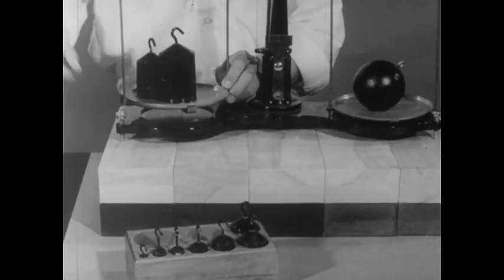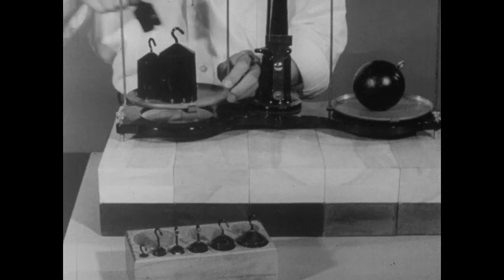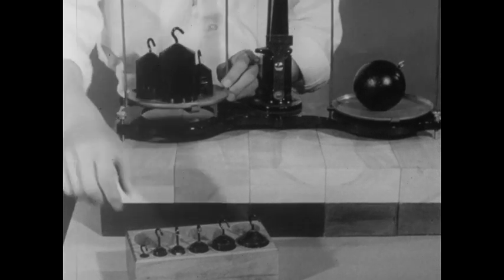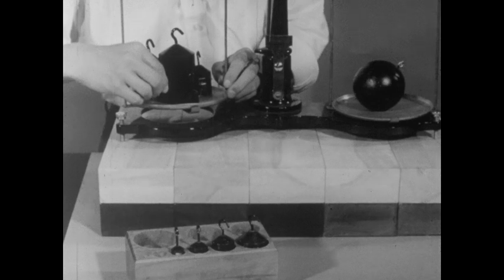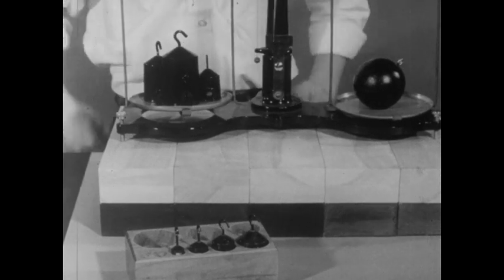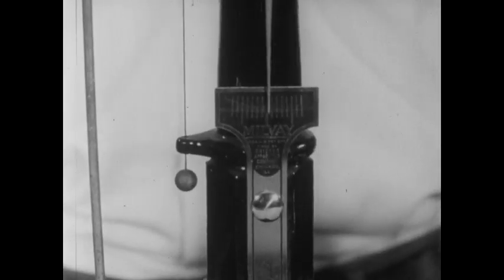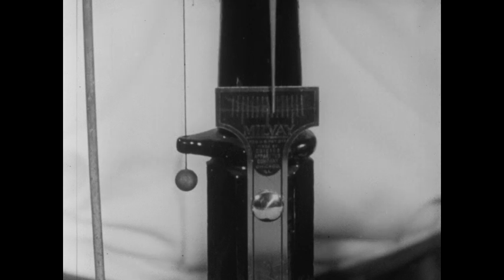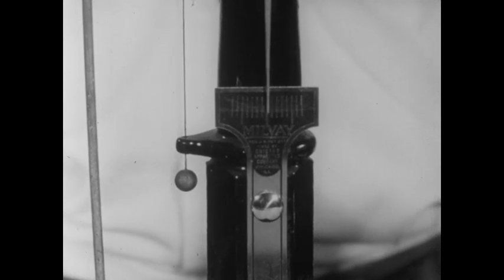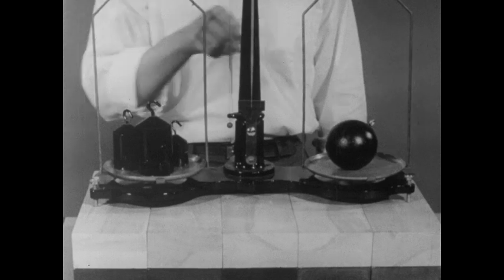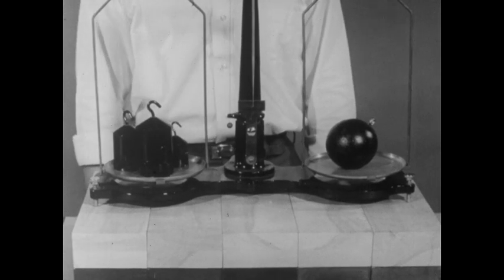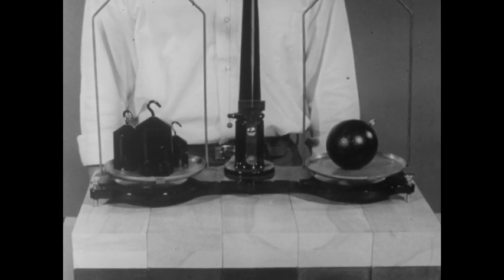With the beam balance, the standard masses are used in the actual comparison. So, the unknown mass is being compared directly with the standard masses. When the masses balance, we know that the quantity of mass on each side is the same. This is the principle of the beam balance.